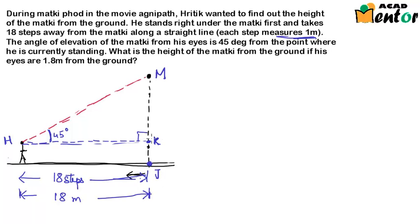So this angle here is 90 degrees. And triangle MHK is a right triangle and angle K here is 90 degrees. We also know that this length HK is 18 meters.